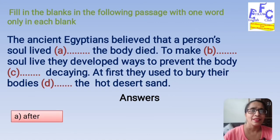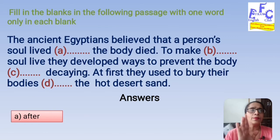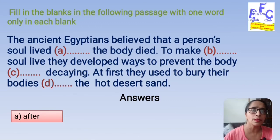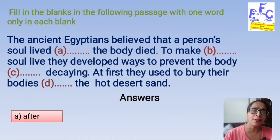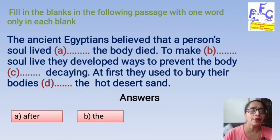To make — soul live, they developed ways to prevent the body. So here we are talking about a particular soul, so we need an article. Articles, as you know, are a, an, and the. Here we need a reference to a particular soul — whether it is a common or a particular soul. Since they are talking about a particular soul, the definite article 'the' will be used. To make the soul live. The second blank is confirmed to be filled with 'the.'